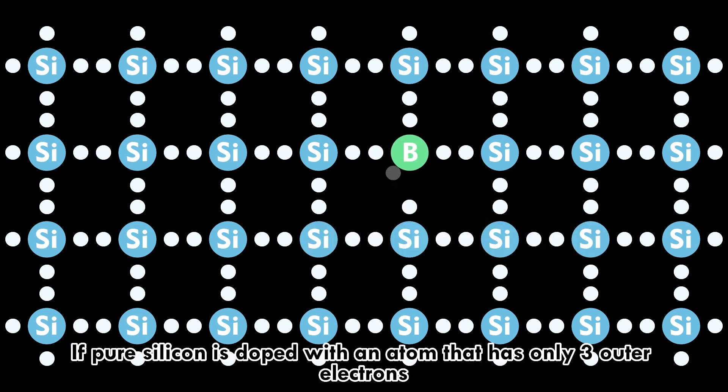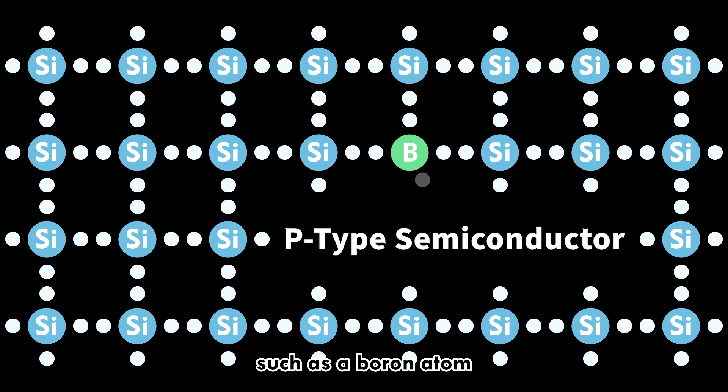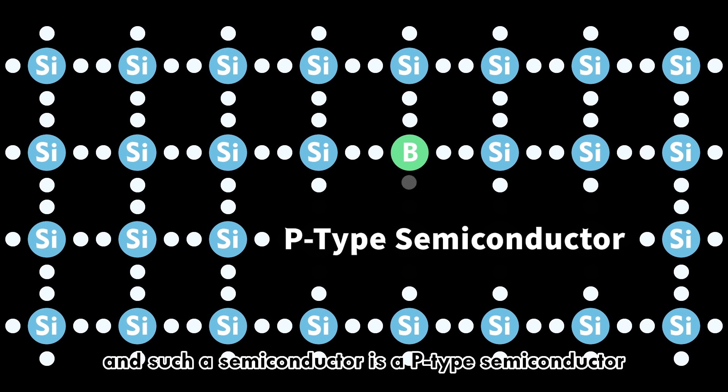If pure silicon is doped with an atom that has only three outer electrons, such as boron, the surrounding silicon atoms have one electron that cannot form a covalent bond with the boron atom. This creates a vacancy called a hole, and such a semiconductor is a p-type semiconductor.